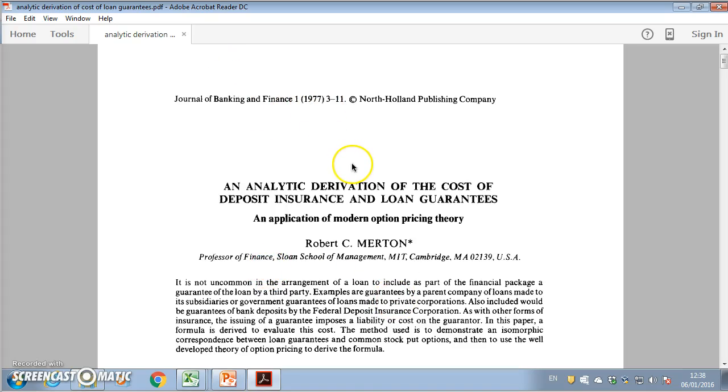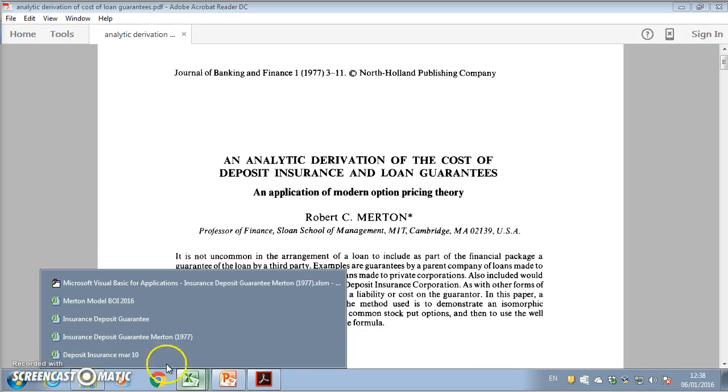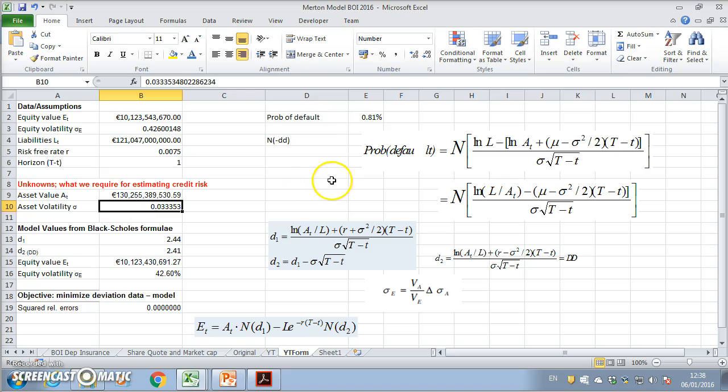Merton 1977 set out a framework for analyzing deposit insurance and loan guarantees. Of interest here is a discussion previously relating to estimating the probability of default and using figures from Bank of Ireland. I estimated that using the Merton model and the probability of default using distance to default was less than 1%, so 0.81%.